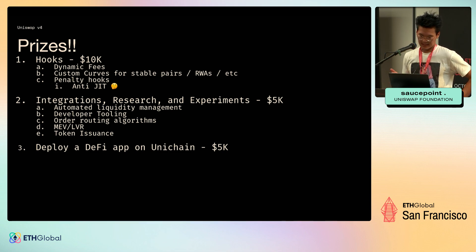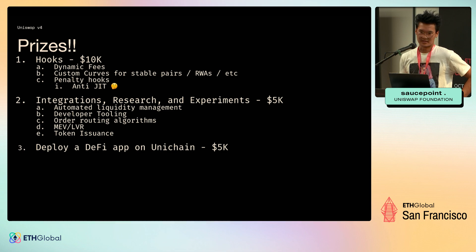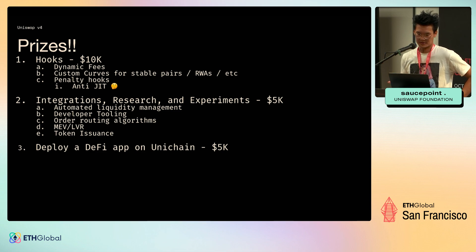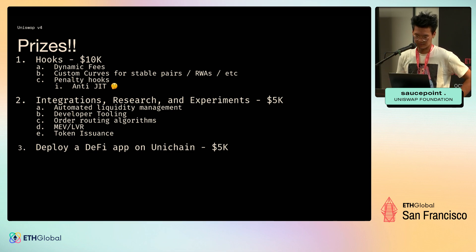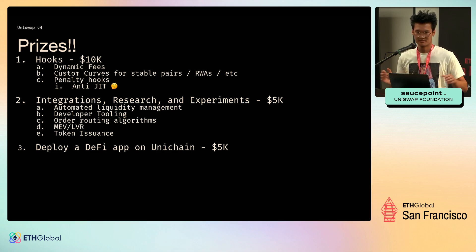Our second category is a catch-all: if you're building on Uniswap v4 but not directly building a hook, you could still be eligible for a prize. That includes liquidity management, developer tooling, MEV and LVR research, and token issuance products. Our last category is simply deploying a DeFi app on Unichain — it doesn't have to be Uniswap-specific; any DeFi app is eligible.